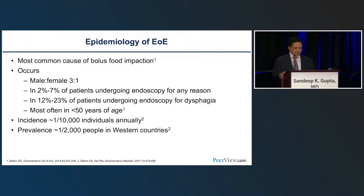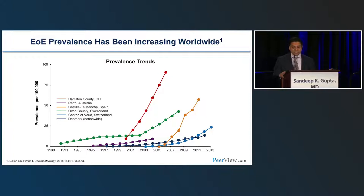The incidence and prevalence of EOE have been increasing, as shown across different geographic regions including the U.S., Australia, Spain, Switzerland, and Denmark. The common theme is that in the last 10 to 20 years there has been an increasing prevalence of this disease — which we do not think is solely due to improved recognition, but also reflects a true increase in incidence.